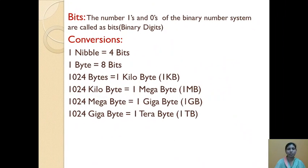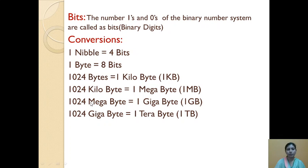Bits: the numbers 0 and 1 in the binary number system are called bits. Important binary conversions to remember: 1 nibble equals 4 bits; 1 byte equals 8 bits; 1024 bytes equals 1 KB (kilobyte); 1024 kilobytes equals 1 MB (megabyte); 1024 megabytes equals 1 GB (gigabyte). This conversion topic often comes for 2 marks.